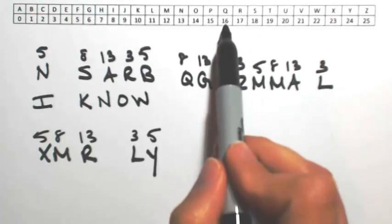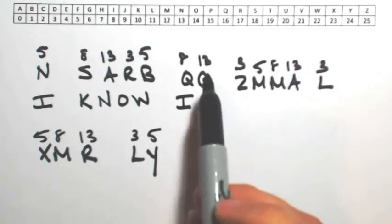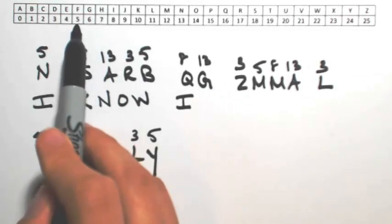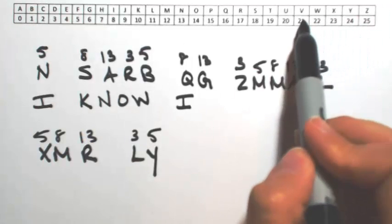The Q was shifted by 8, so 16 minus 8 is an I. G was shifted by 13, so counting back 13 positions from 6.